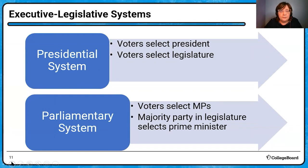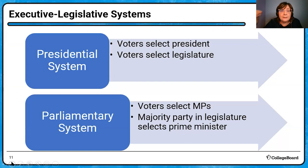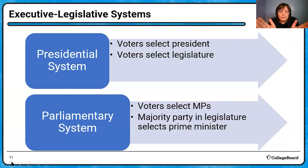The two fundamental democratic institutional structures for executive and legislative relations are the presidential system and the parliamentary system. A major distinguishing factor of a presidential system is that voters select the president and they select the legislature separately. Presidential systems have separation of power — the voters choose them in separate elections. This separation is how you restrain the executive: you have these dueling institutions. Presidential systems keep power separate.